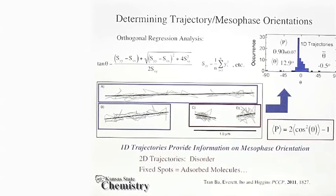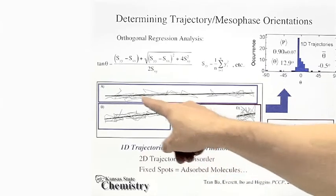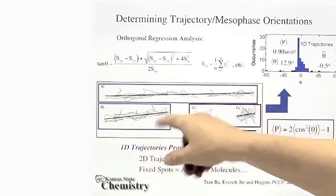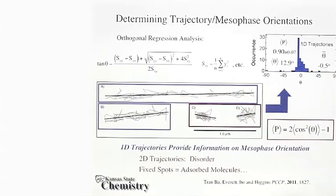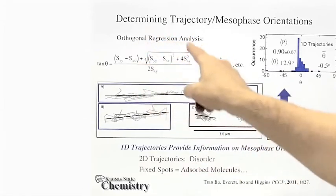In our studies, we are most interested in characterizing the level of order and organization of the nanopores or nanostructures. So what we are going to do is take one-dimensional trajectories like these and fit them to a line using orthogonal regression methods.